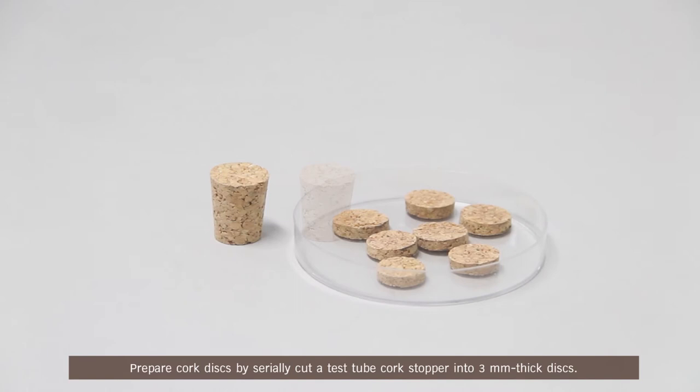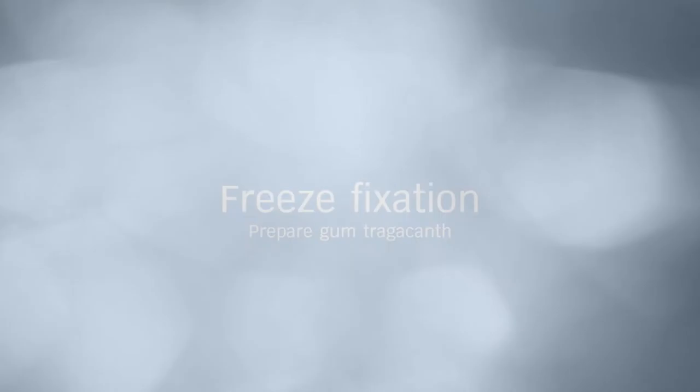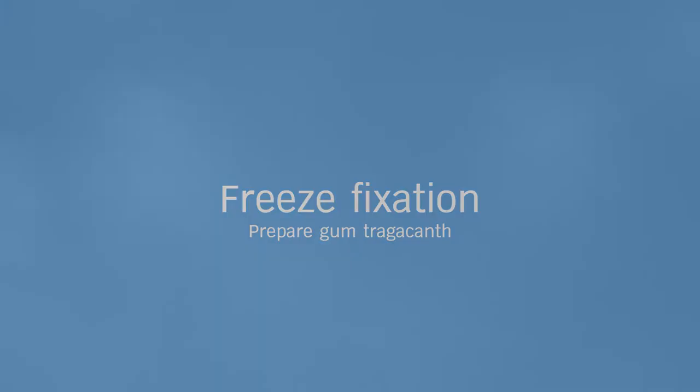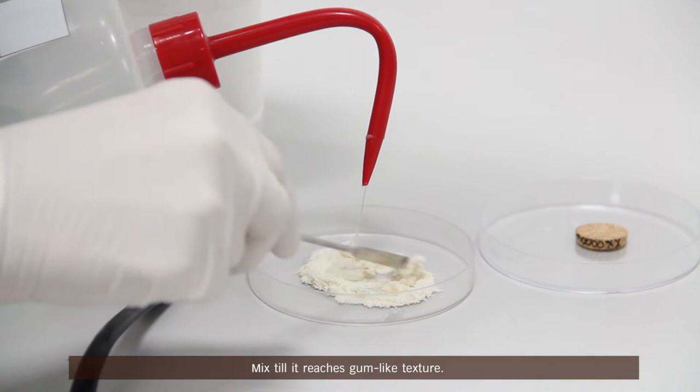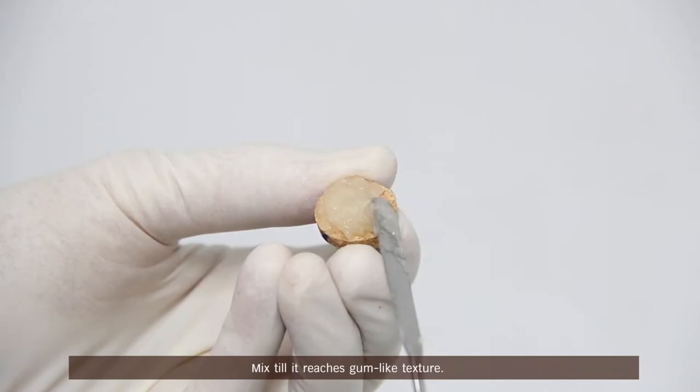Prepare cork discs by serially cutting a test tube cork stopper into 3 mm thick discs. Label each cork disc with patient identifier. Prepare gum tragacanth by adding drops of distilled water into tragacanth powder. Mix till it reaches gum-like texture.